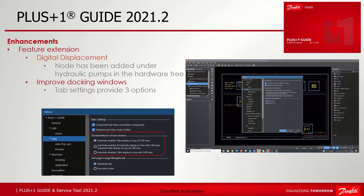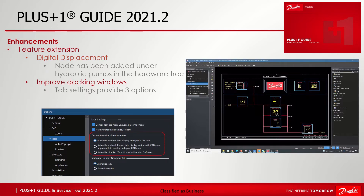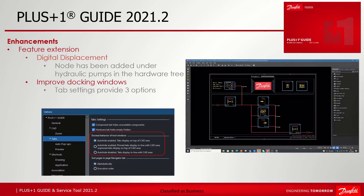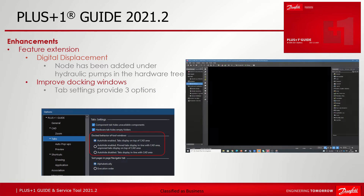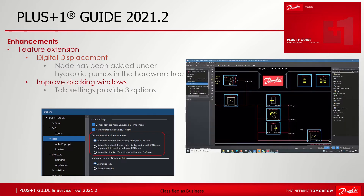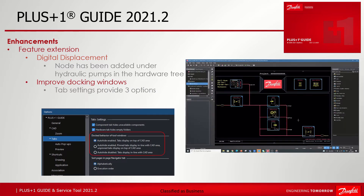The third option is auto height disabled, tabs display in line with cut area. This setting might be useful if there is no need for auto height when the drawing area is, for example, big enough. The zoom home fits perfectly between all GUIDE windows.